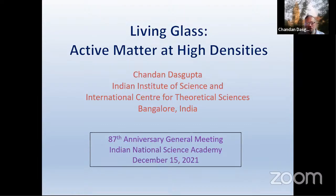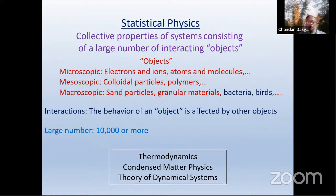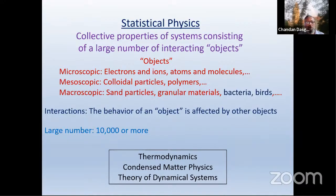Today I'd like to talk about something we have been working on for the last five or six years: active matter at high density. Before going into the actual subject, I'd like to say one or two things about the area in which I work, because this award is given for some lifetime achievement. I've been working in the area of statistical physics, where one is interested in trying to understand the collective properties of systems consisting of a large number of interacting objects. Traditionally, these interacting objects are microscopic — electrons and ions, atoms and molecules.